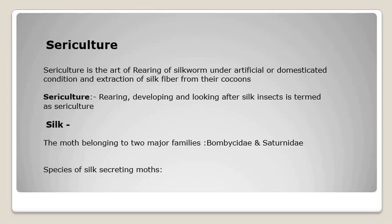Silk is a protein secreted by the larva of certain Lepidopteran moths. These Lepidopteran moths belong to the family Bombycidae and Saturniidae. Bombycidae shows only one species — Bombyx mori — and the rest of the silk-producing moths belong to family Saturniidae. Different species of silk-secreting moths include mulberry silk moth, muga silk moth, tassar silk moth, eri silk moth, and giant silk moth. Out of all these, the mulberry silk moth produces the most lustrous and high-demand silk.